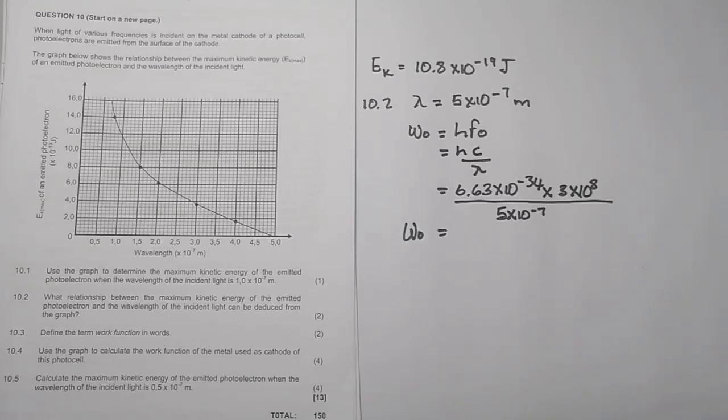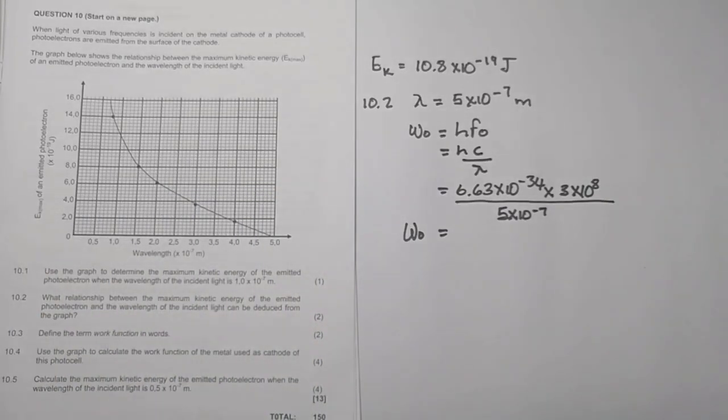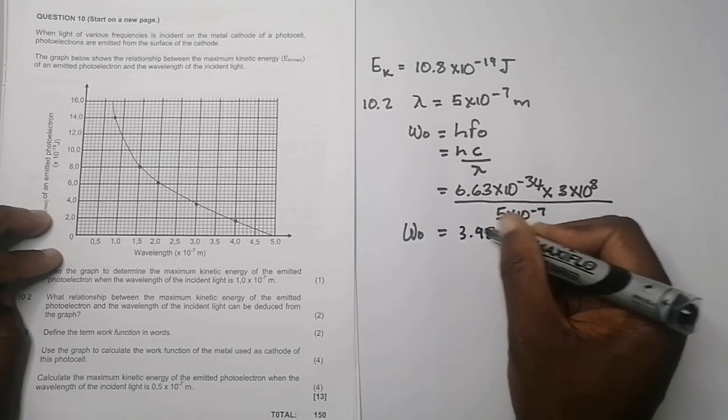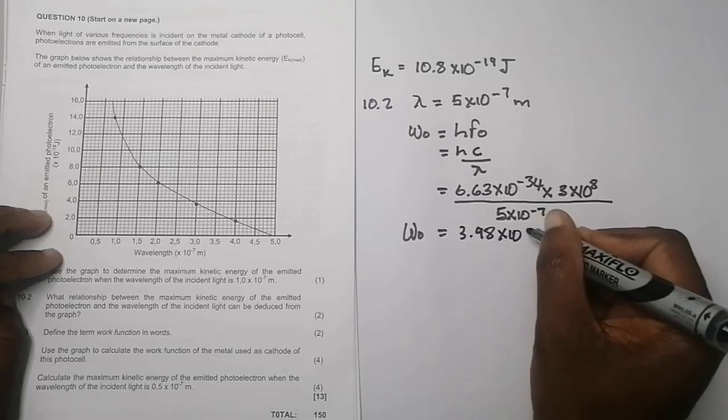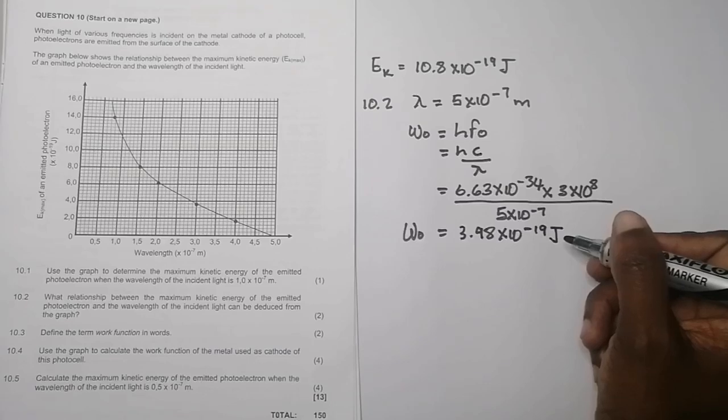I hope that makes sense because we're saying at the work function or rather at the threshold frequency, that's when my kinetic energy max is zero. It looks like I had a kinetic energy all along until I got to that point there. So our final answer: I'm just calculating quickly. 6.63 times 10 to the power minus 34 multiplied by 3 times 10 to the power 8 and divide that by 5 times 10 to the power minus 7.